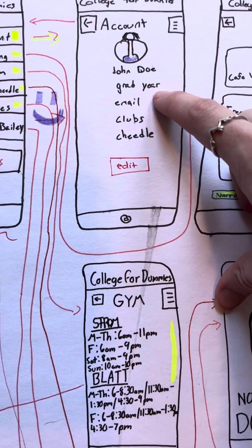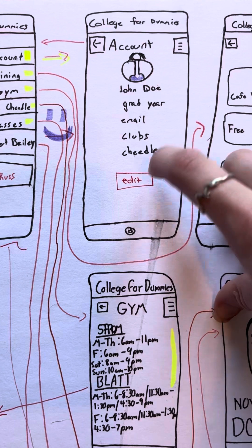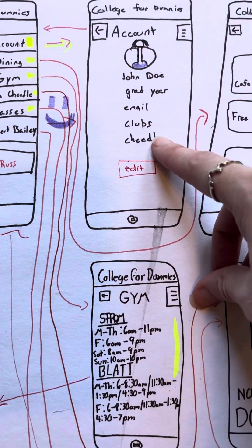Our account shows us our name, our year, our email, the clubs we're in, and you can also edit here if you need to change any of this information.